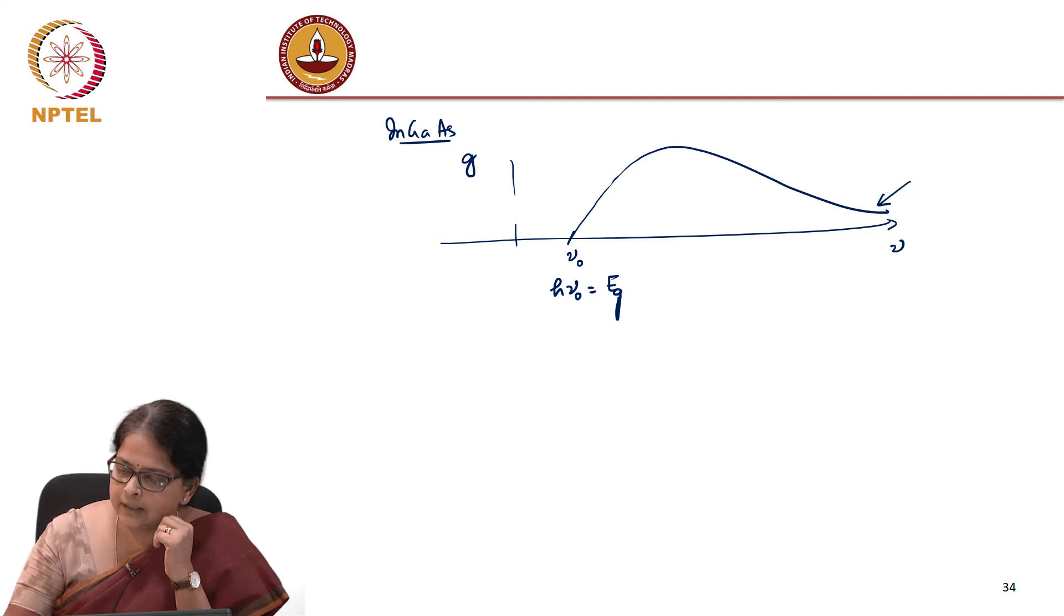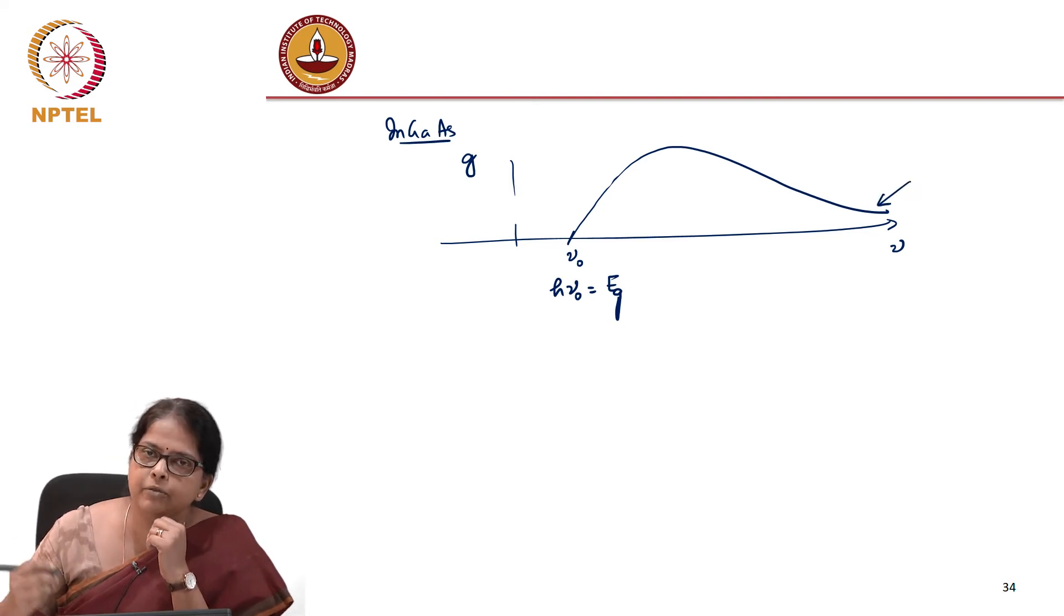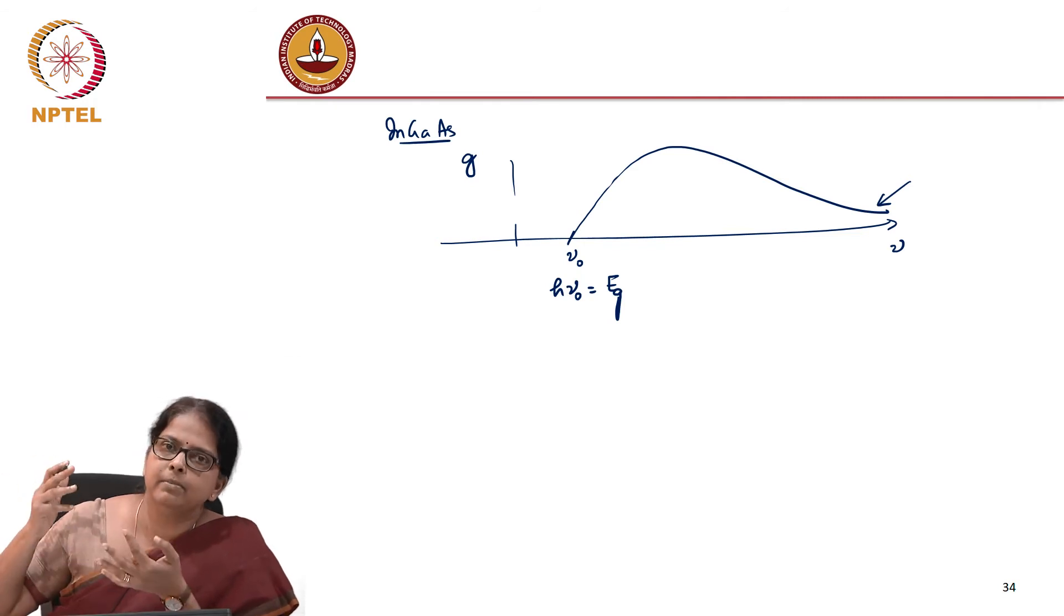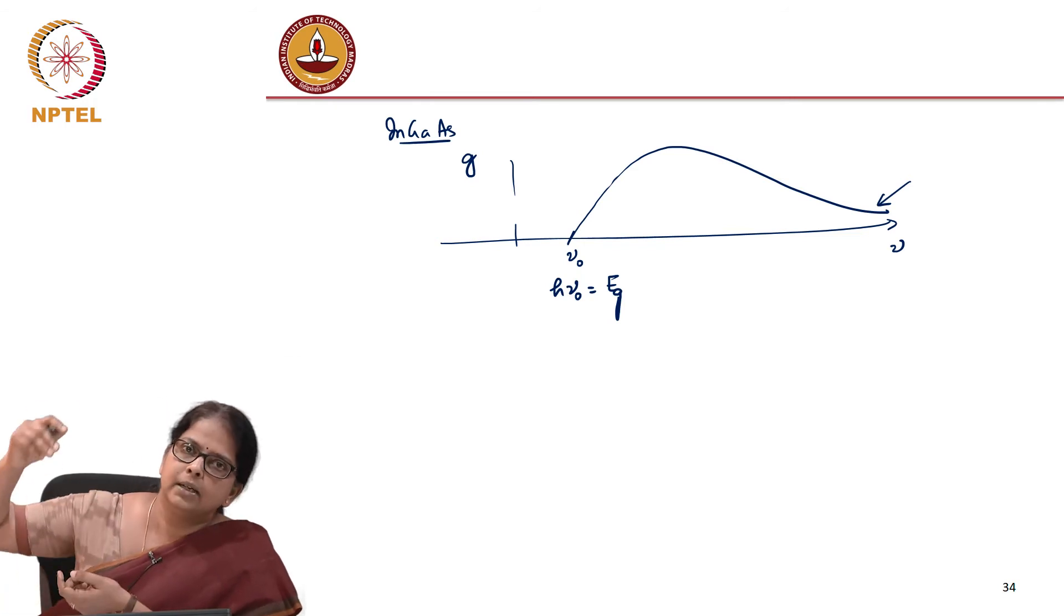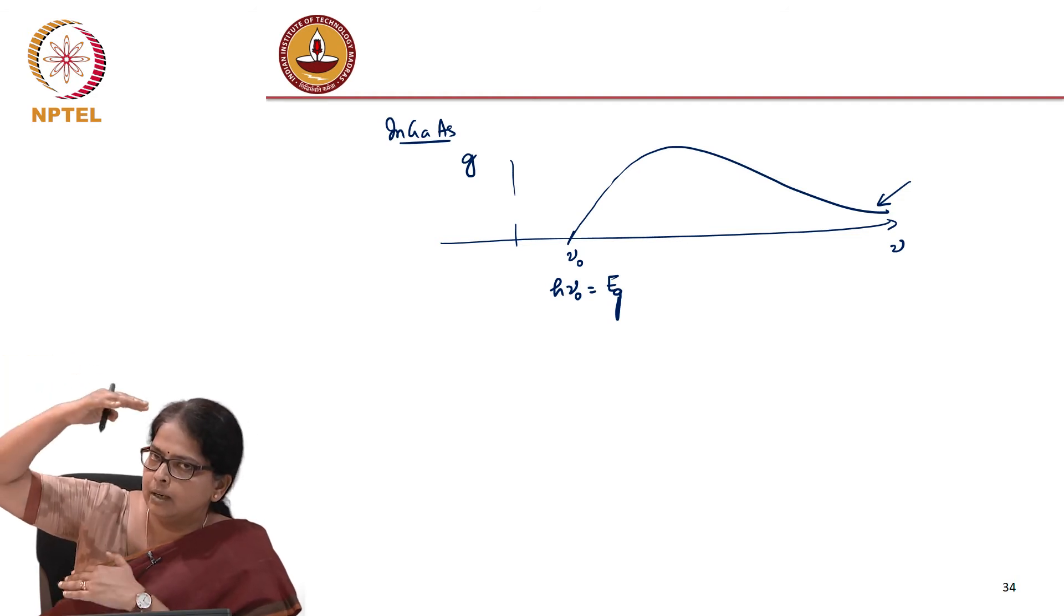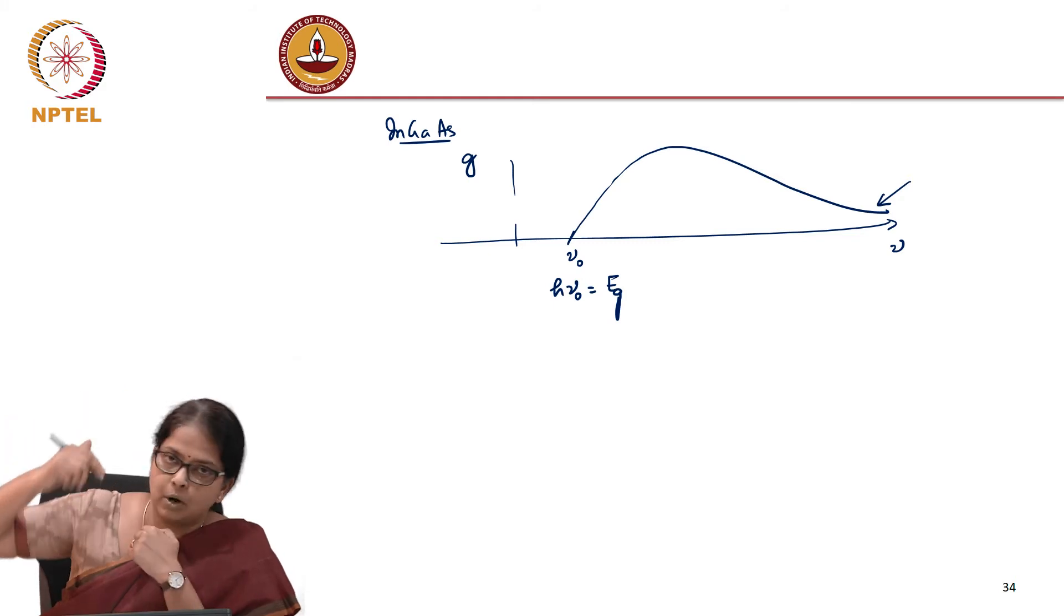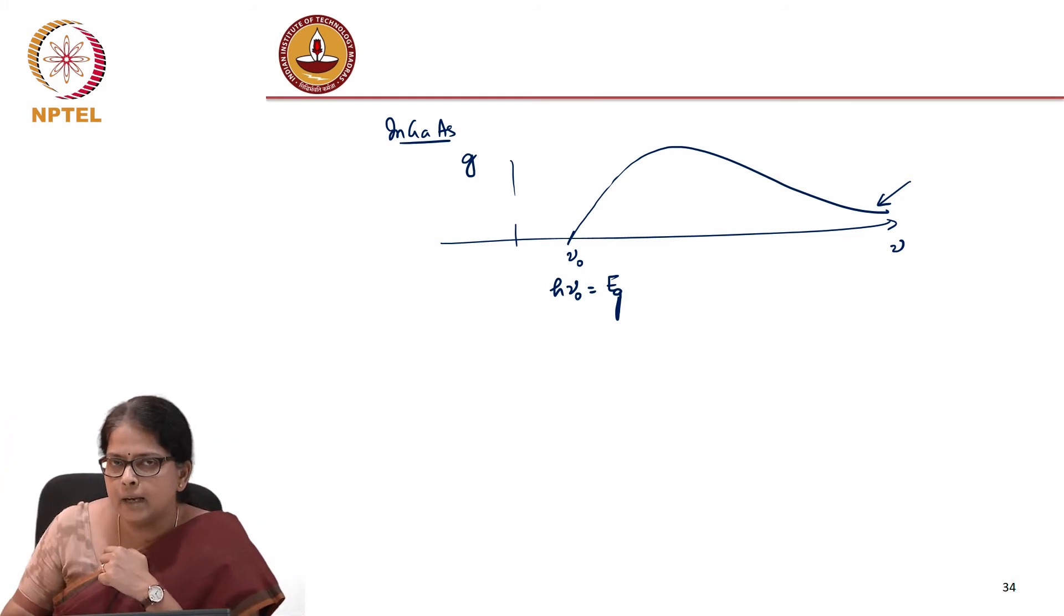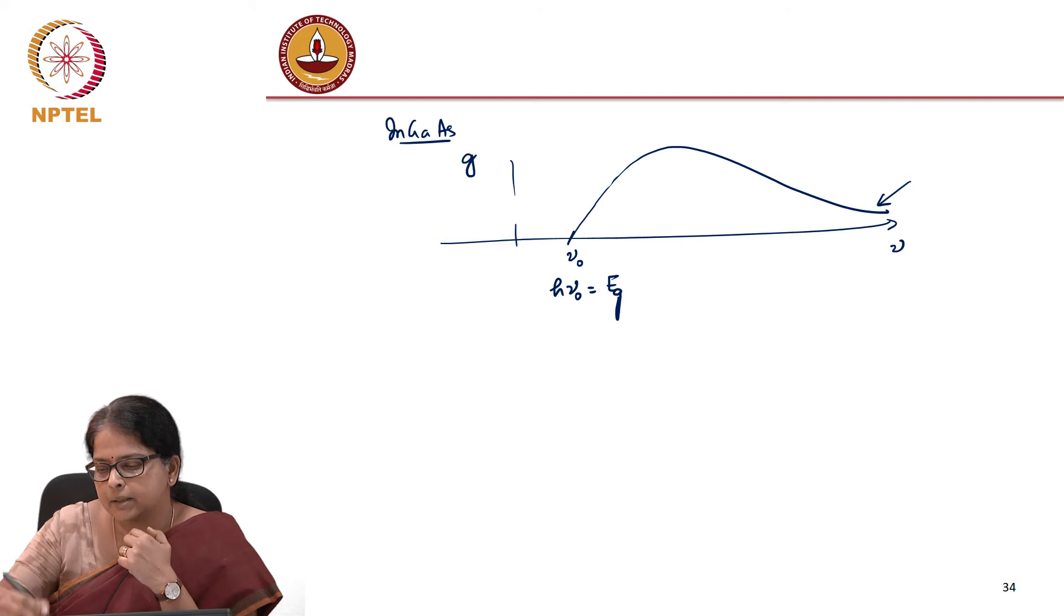That smallest frequency is corresponding to hν₀ = band gap. You have already seen in LEDs that the gain spectrum is somewhat like this, where at larger frequencies, the probability of emission becomes lower, the gain coefficient becomes lower because the probability of occupation of those energy states which are far away corresponding to large energy differences are smaller. There is always a gain peak and we have also seen that with temperature this peak would shift slightly to the right.